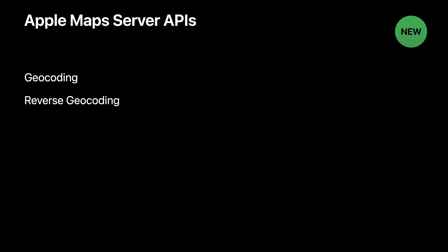We are introducing four new server APIs: geocoding, reverse geocoding, search, and estimated time of arrival, or ETA.